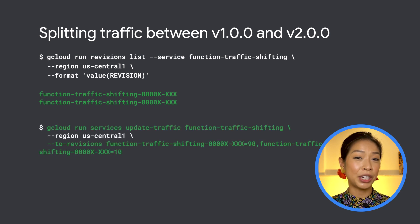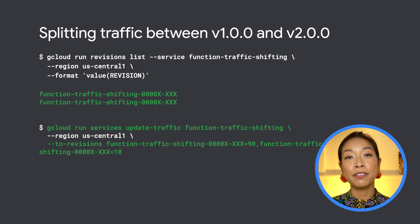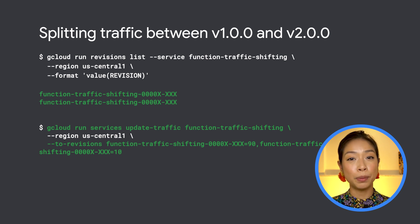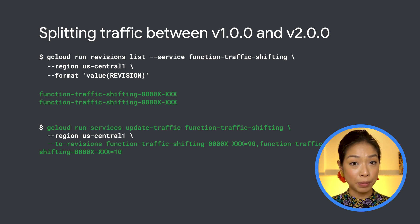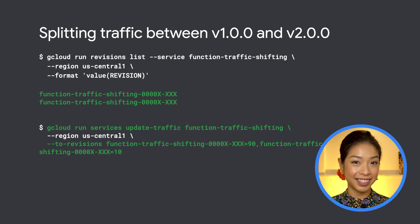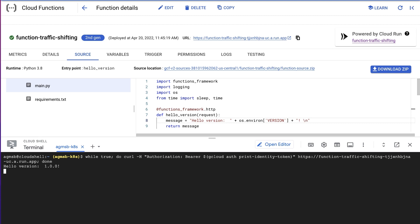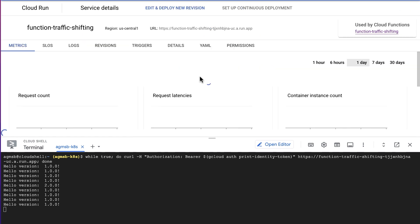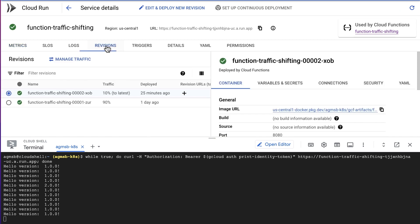Now that Cloud Run has shared the unique revision IDs for our two versions, we can declaratively define how traffic should flow to each revision. In our case, we want to send 90% of traffic to the first version and 10% to the second. We do so by providing a single parameter to the underlying Cloud Run service backing the Cloud Function with those traffic percentages. Once we begin issuing requests to the function's URL, we can see the response showing which version is being accessed — all configured by simple gcloud commands.